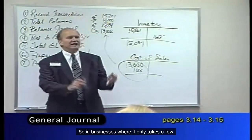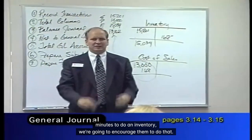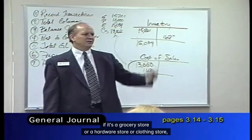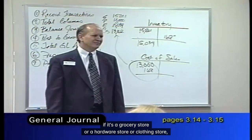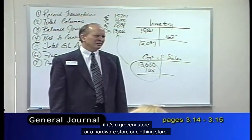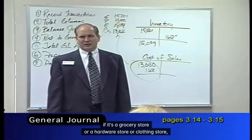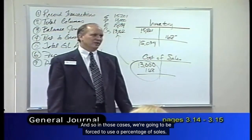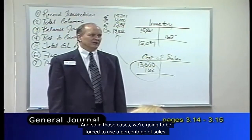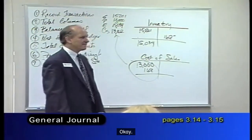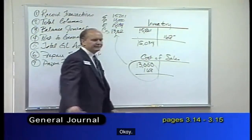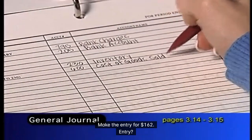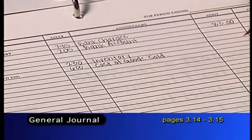In businesses where it only takes a few minutes to do an inventory, we're going to encourage them to do that. On the other hand, if it's a grocery store, hardware store, or clothing store, it might be a major effort to do an inventory, so in those cases we'll be forced to use a percentage of sales. Go ahead and make the entry for $162 — that's entry F.